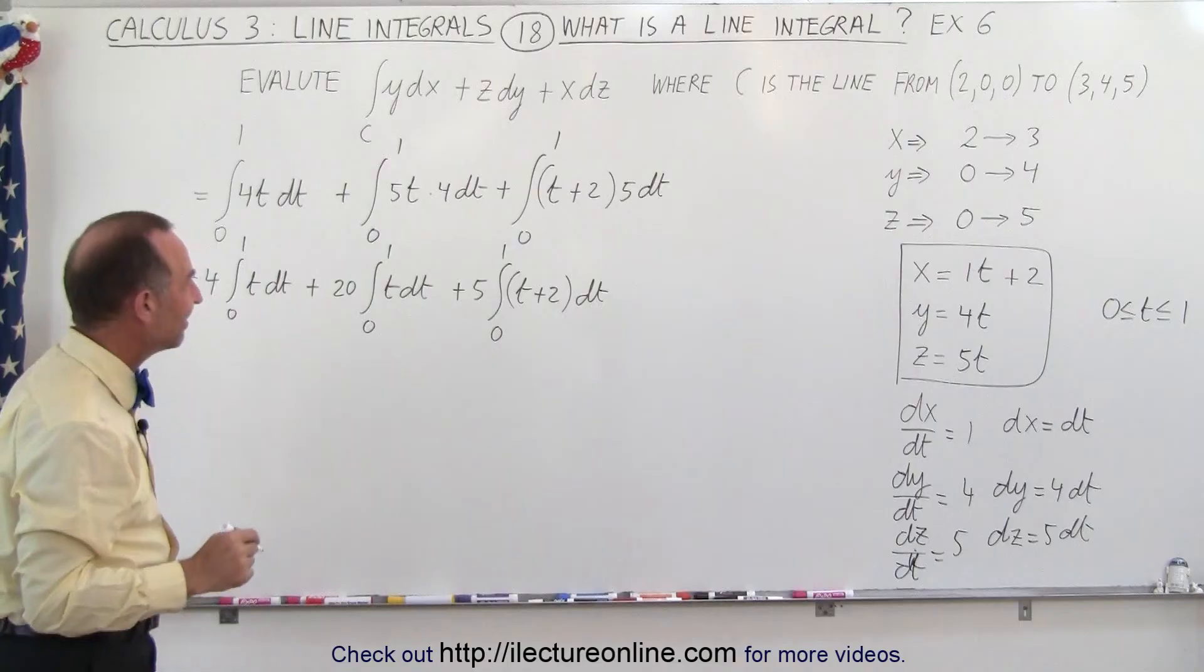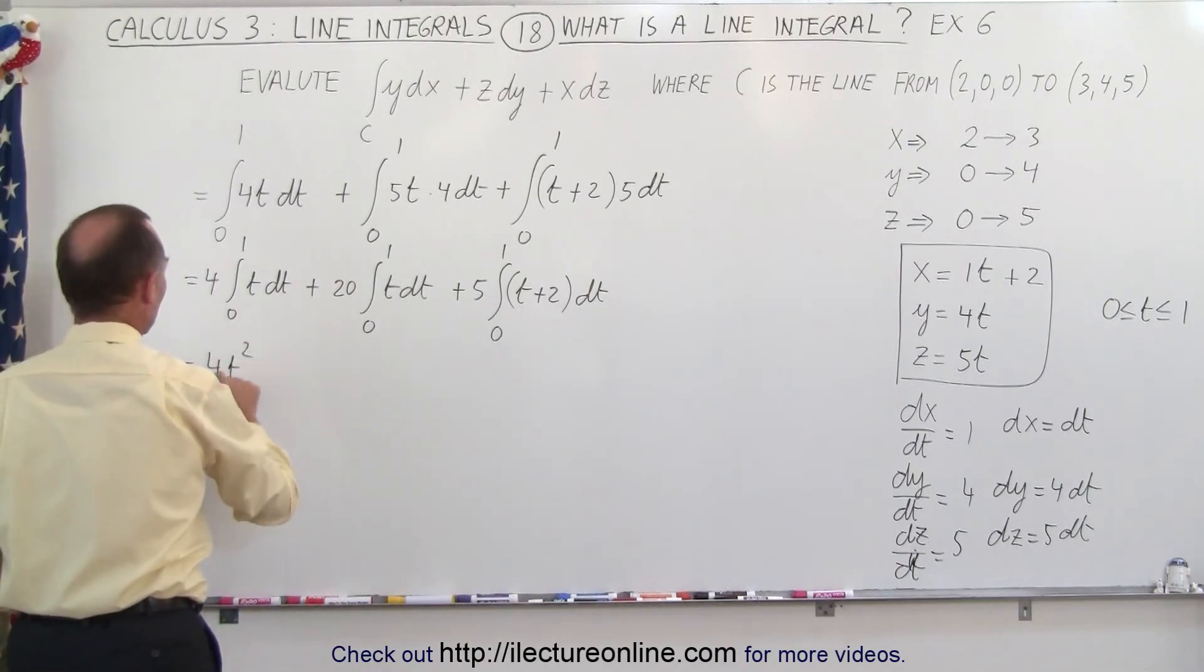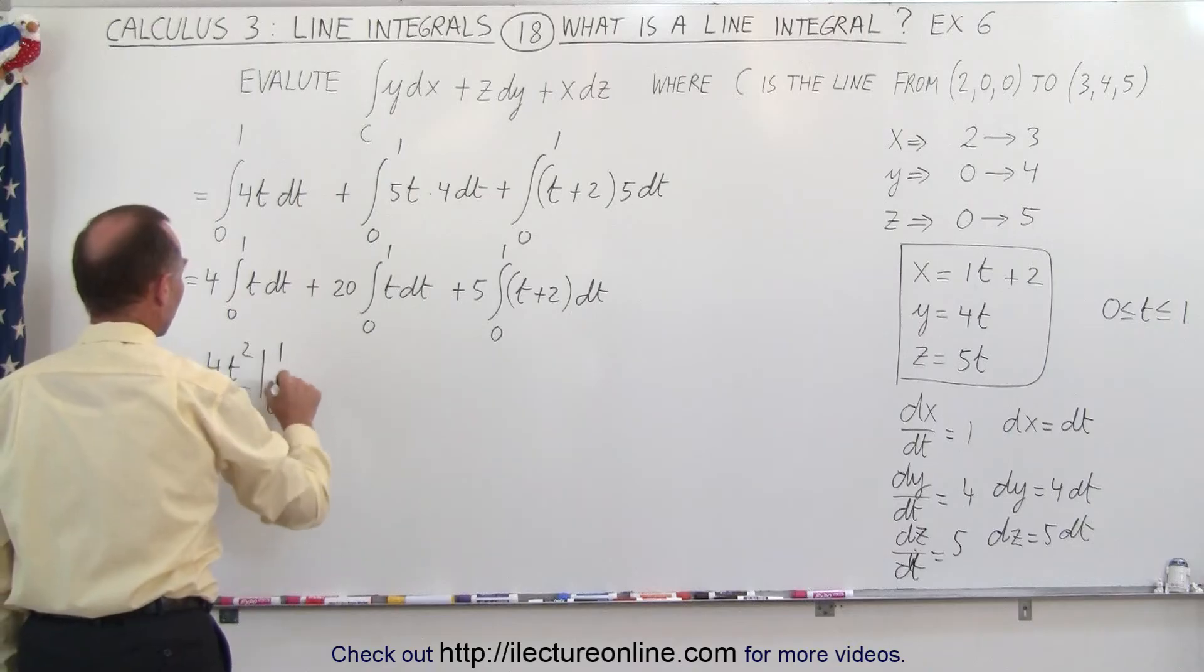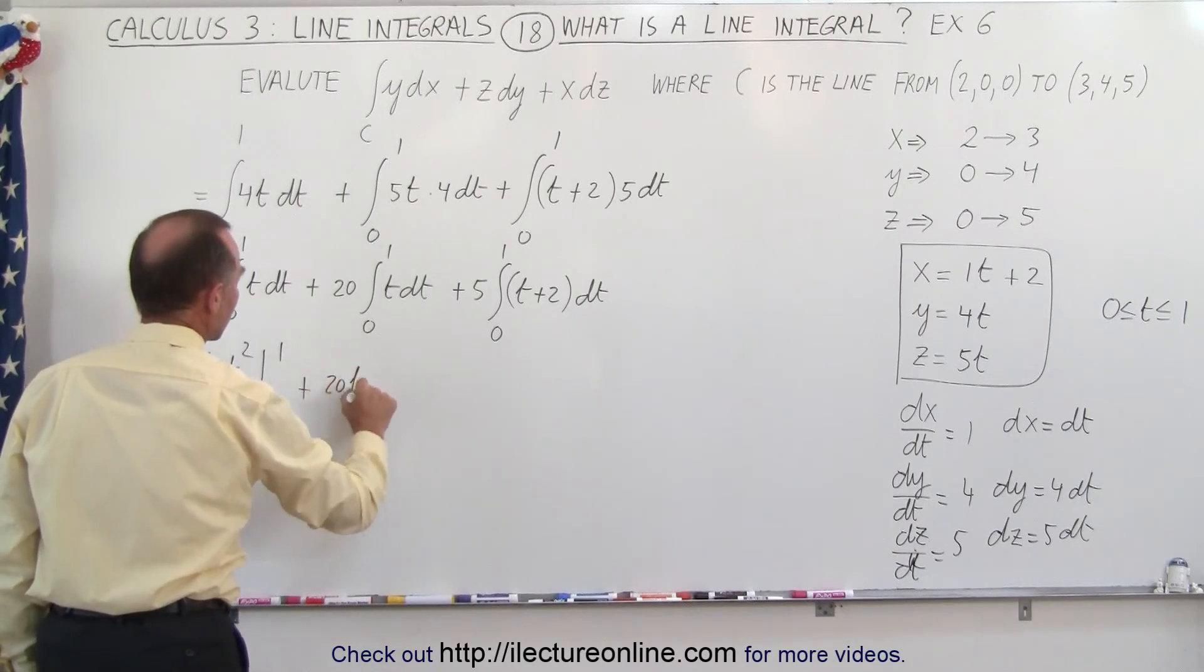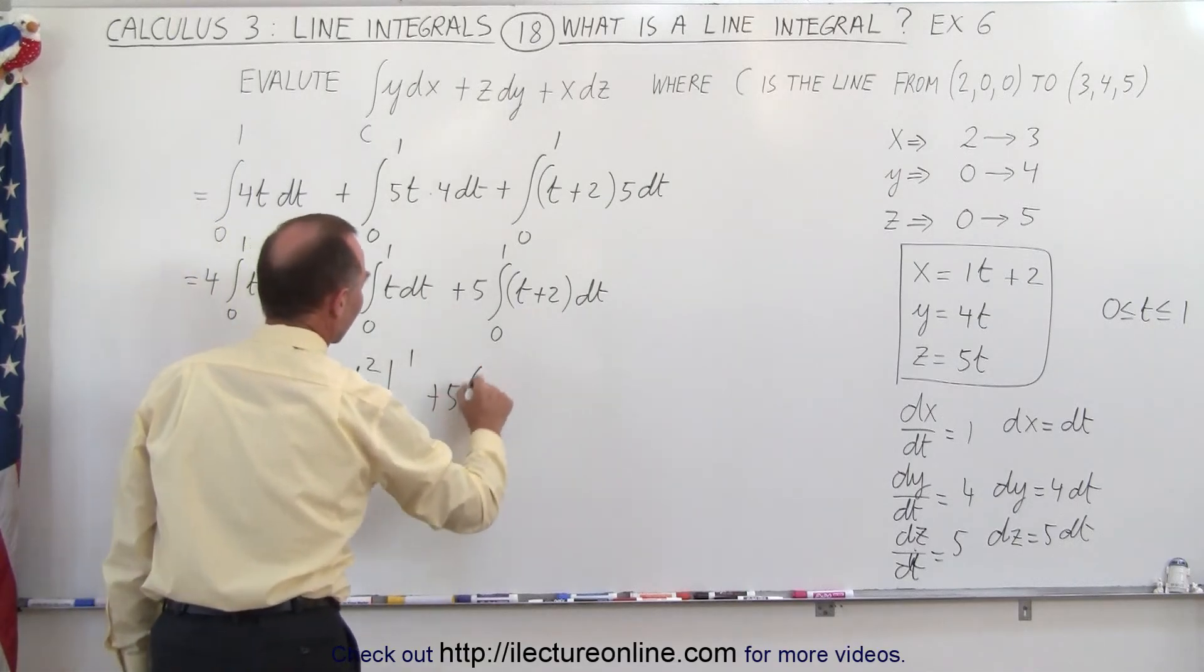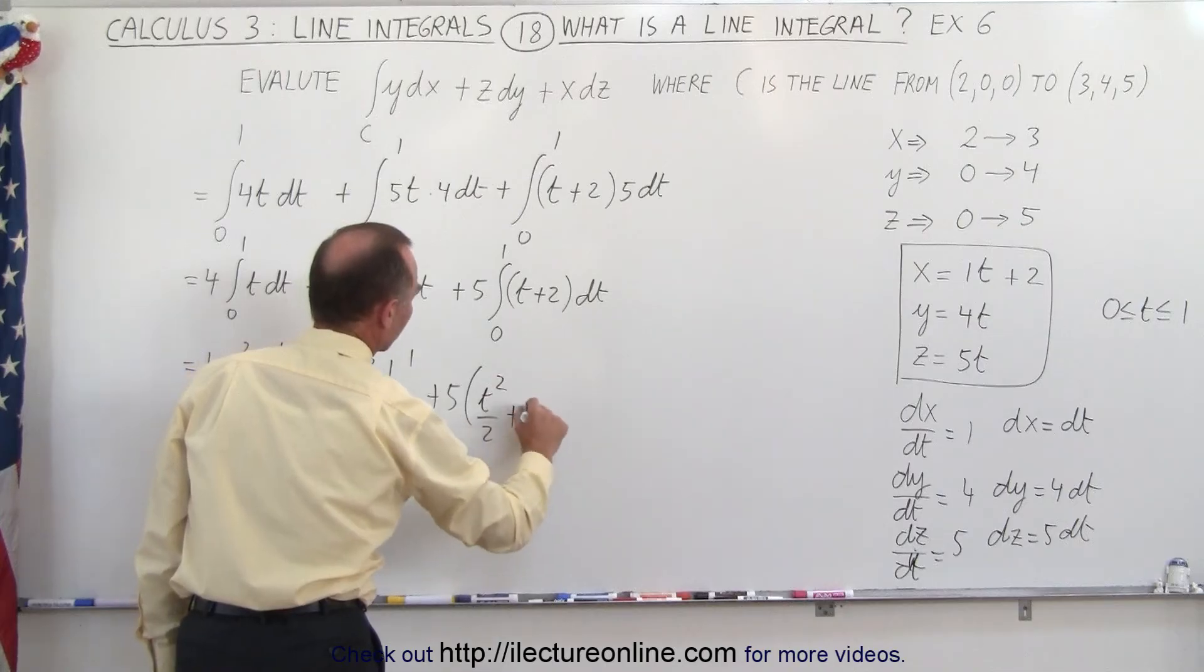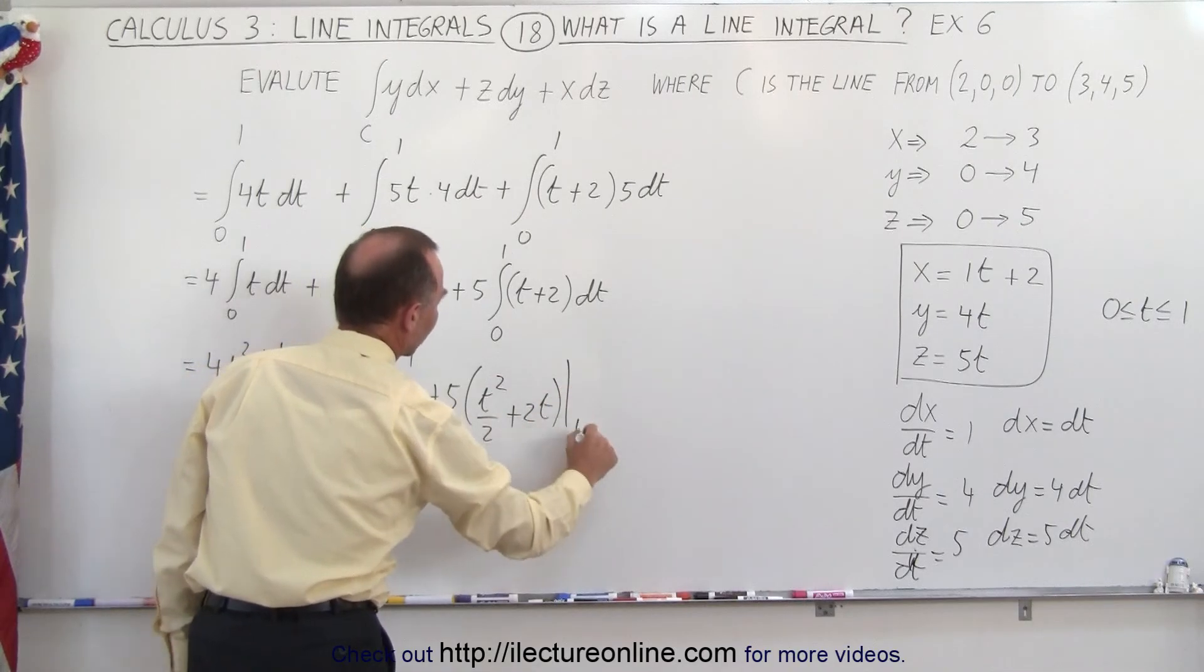And those are of course relatively easy integrals. So this becomes equal to 4t² over 2 from 0 to 1, plus 20t² over 2 from 0 to 1, and plus 5 times t² over 2 plus 2t from 0 to 1.